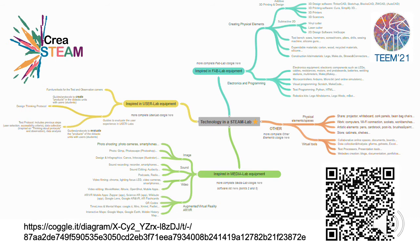This is an example of the current mapping of tools and systems that can be implemented in various types of spaces, such as FabLab, MetaLab, or UserLab. STEAMLab incorporates any of them, though it is much more dynamic and will depend on the possibilities and capacities of each school.